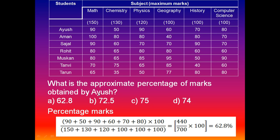Next question: what is the approximate percentage of marks obtained by Ayush? First we add his marks: 90 plus 50 plus 90 plus 60 plus 70 plus 80. We also add all subject full marks: 150 plus 130 plus 120 plus 100 plus 100 plus 100. That gives us 440 by 700, multiplied by 100, which equals 62.8%. This is the approximate mark, and the required answer is option A.